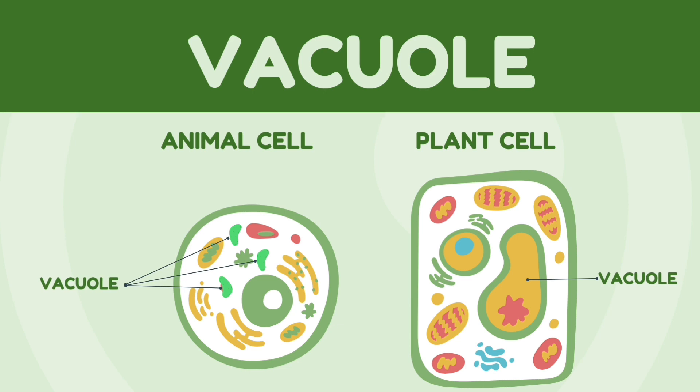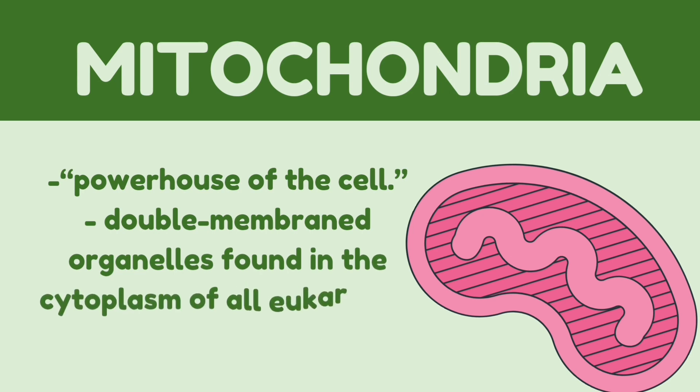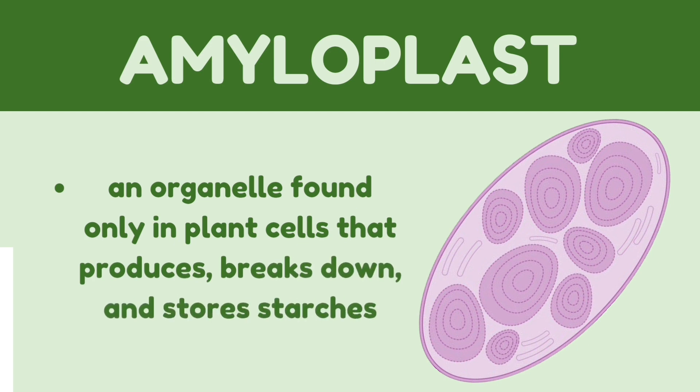Next, we have the mitochondria. It is called the powerhouse of the cell and is a double-membrane organelle found in the cytoplasm of all eukaryotic cells. It is called the powerhouse because it burns and breaks the chemical bonds of glucose to release energy for work in the cell. Next, the amyloplast is an organelle found only in plant cells that produces, breaks down, and stores starches. It is commonly found in seeds, fruits, tubers, and roots for carbon storage, but also found at low frequencies in leaves, stems, and roots for temporary storage.